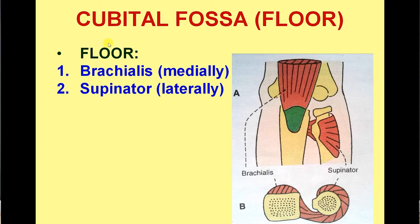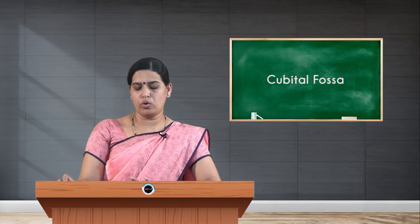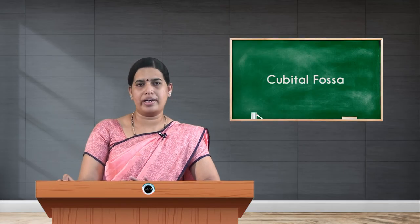Coming to the floor relations: the floor is formed by two muscles. In the upper part it is the lower portion of brachialis as it comes toward its insertion to the coronoid process of the ulna. In the lower part laterally you find the supinator muscle. So brachialis above and supinator below form the floor of the cubital fossa.